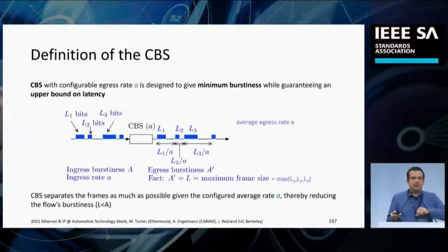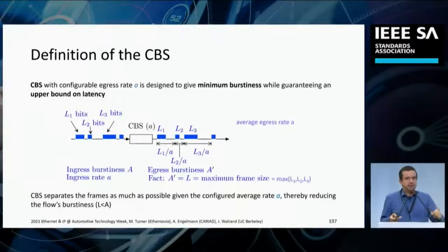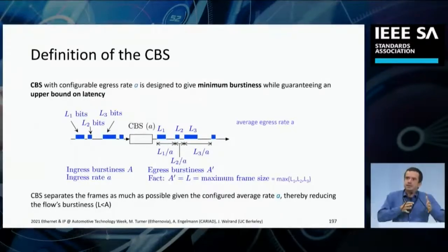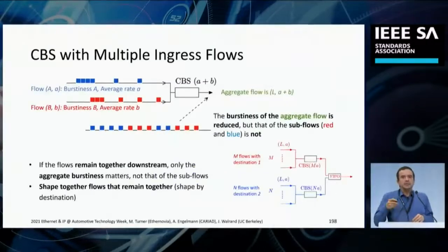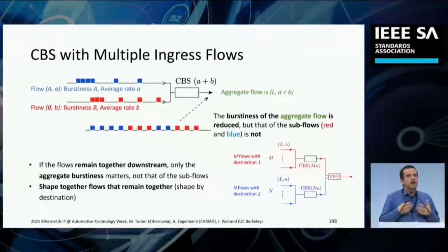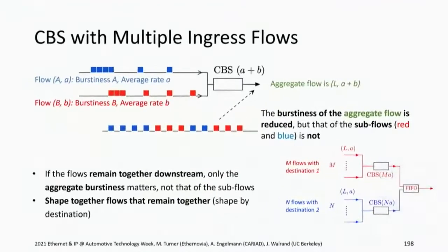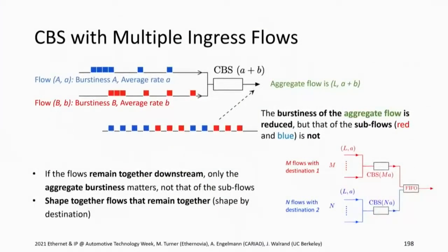The credit-based shaper was not meant to get stuff anywhere as quickly as possible. It was meant to introduce the maximum amount of gaps between frames, spreading them out as far as possible while still sticking to an upper bound latency. The downside — it operates on an aggregate, not on a per-flow basis. If there is a bursty aggregate coming in, that burst is just inherited onto the other side.